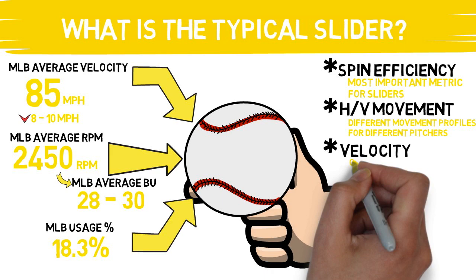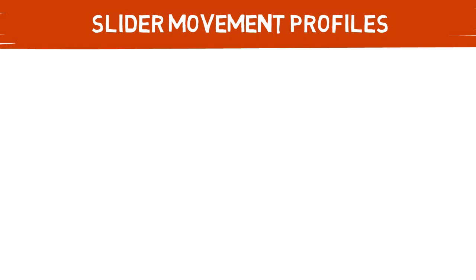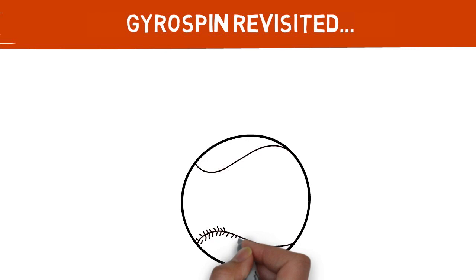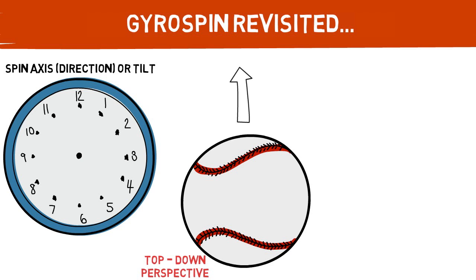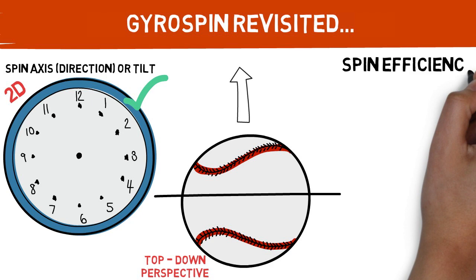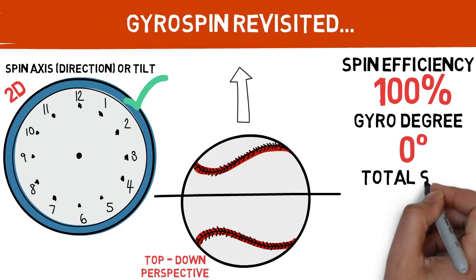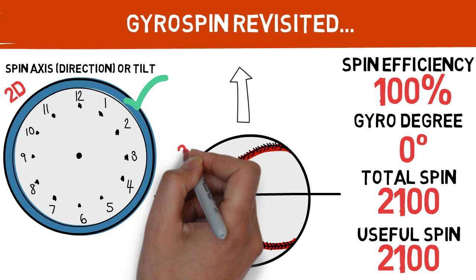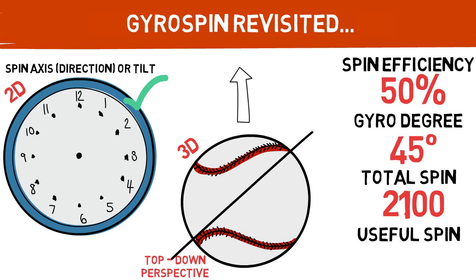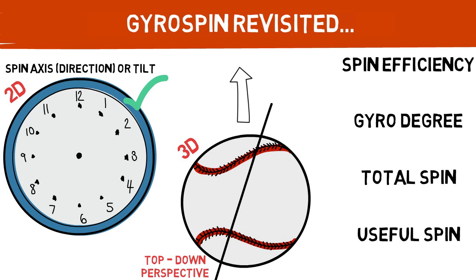Typically at this point we would jump into the different movement profiles of this pitch, but before we can do that, we have to take a step back and revisit the idea of gyrospin. To properly illustrate this, we will begin by picturing a typical fastball from the top down, which allows us to utilize our tilt clock. However, this is a two-dimensional approach to pitch design. This is where gyrospin comes in. On a pitch that has zero gyrospin — or 100% spin efficiency — you would get numbers like this. But if we take this idea and put it into a real-world three-dimensional context, you can see how these numbers begin to change. Check out the video on gyroscopic spin in the description below for a deeper dive.